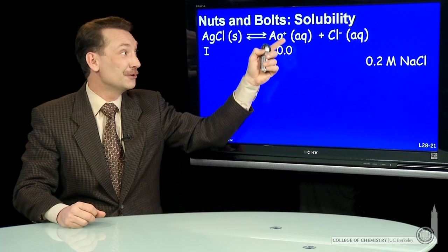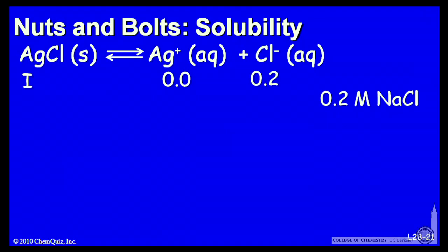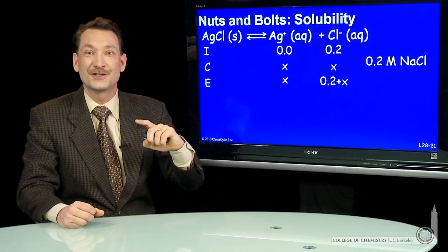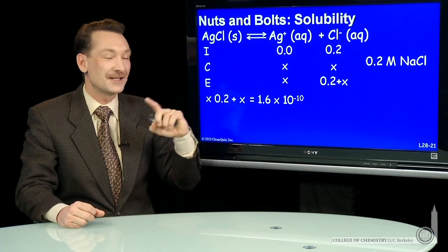We'll take an initial solution with no silver ions and 0.2 molar chloride ions from our sodium chloride. We'll put in a chunk of solid silver chloride. And when we do that, a little bit will dissolve, forming x molar more silver ions and x molar more chloride ions, so that at equilibrium you'll have x molar silver ions and 0.2 plus x molar chloride ions.